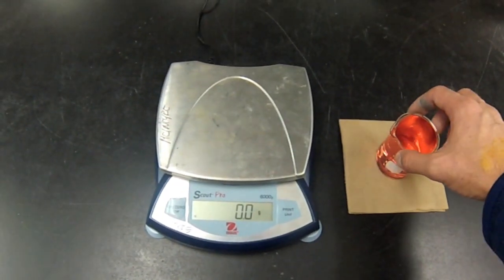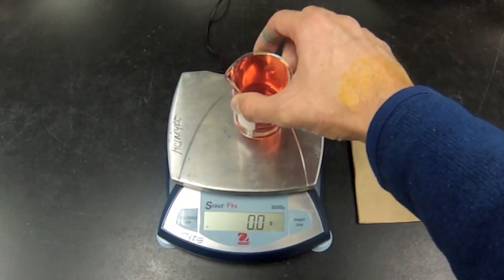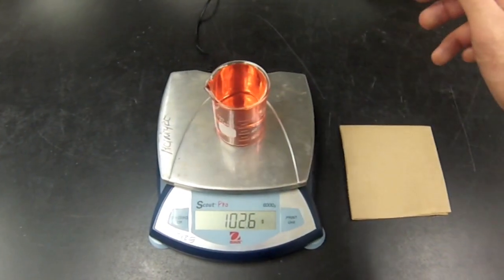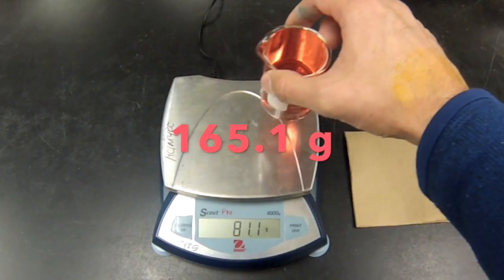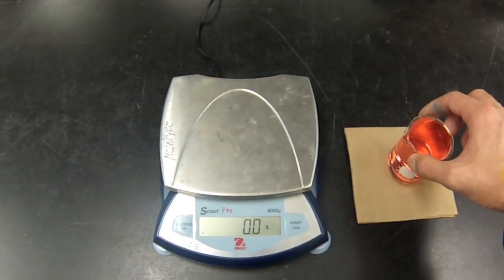Now we've emptied the cold water and refilled the beaker with the warm water. And the warm water weighs in at 165.1 grams, a little bit less than the cold water.